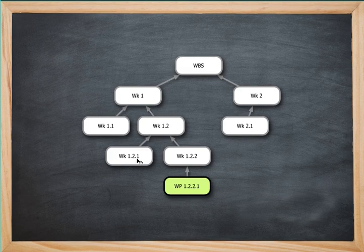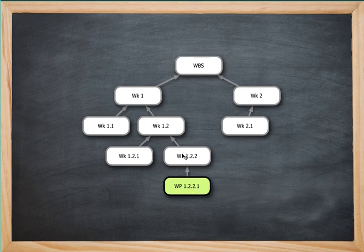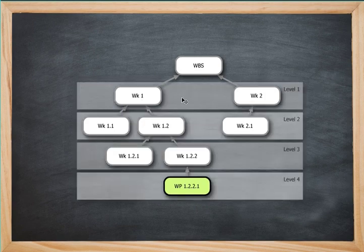So there's a Work 1.2.1 and a Work 1.2.2. Underneath Work 1.2.2, there is something called a Work Package, denoted as 1.2.2.1. Without the numbers, you're going to find great difficulty identifying specific work areas. Numbering them this way, much like outlining in grade school, really does help. You could view these also as levels, where the first level includes Work 1 and Work 2, Level 2 one level down, and so on.